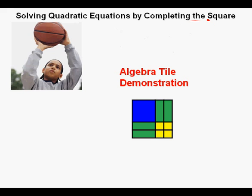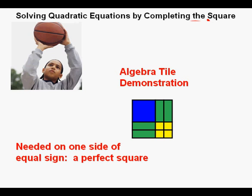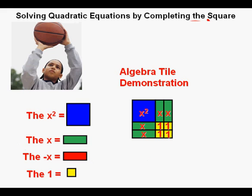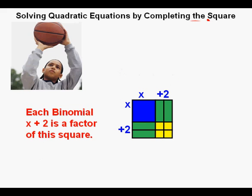We're going to take a little time exploring what a complete square is using algebra tiles. What we need to create on the left side of the equal sign is called a perfect square, or a trinomial square that can be factored into two identical binomials. This is an algebra tile diagram of a perfect square. The big blue square is x squared, the green rectangles are x's, and the yellow squares are ones. Also, a skinny green rectangle represents a negative x. The factors of this square are quantity x plus 2 and quantity x plus 2, shown on the top and side of the diagram.